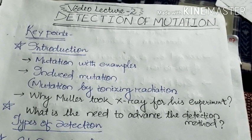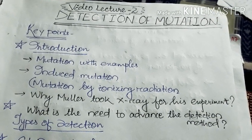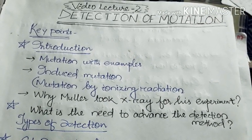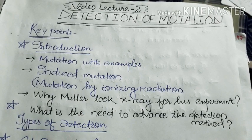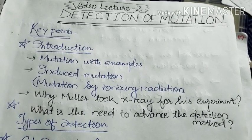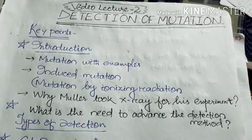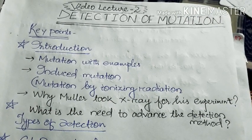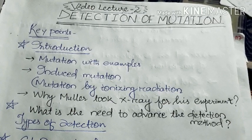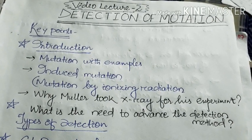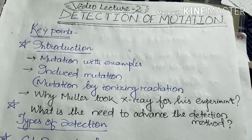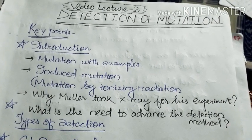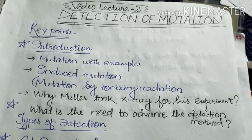Let me briefly introduce the topic. The topic is detection of mutation. Mutation is the unwanted changes in the number or the sequence of nucleotides, and it is of various types. This is our introduction — the first point is mutation with examples.